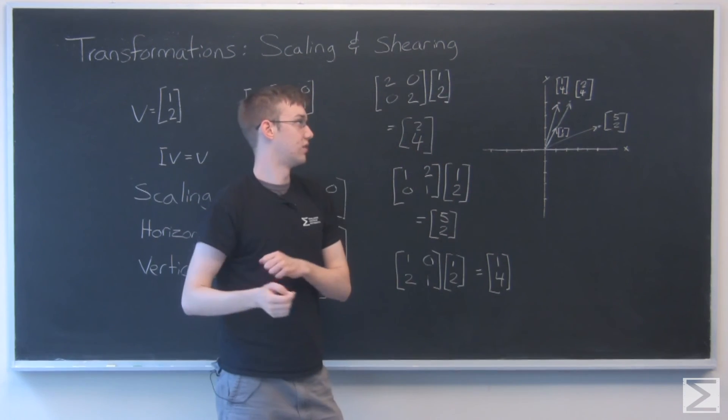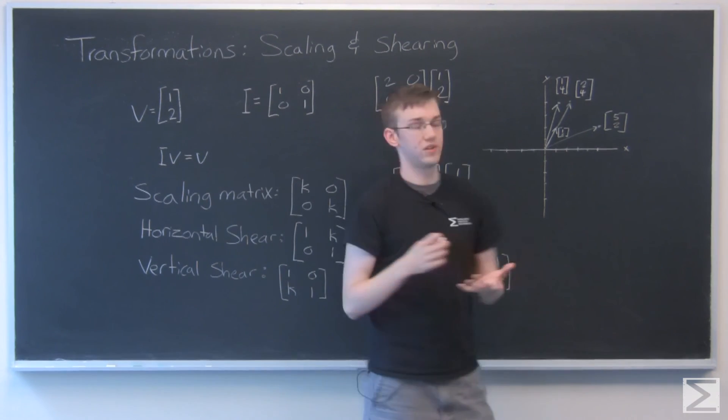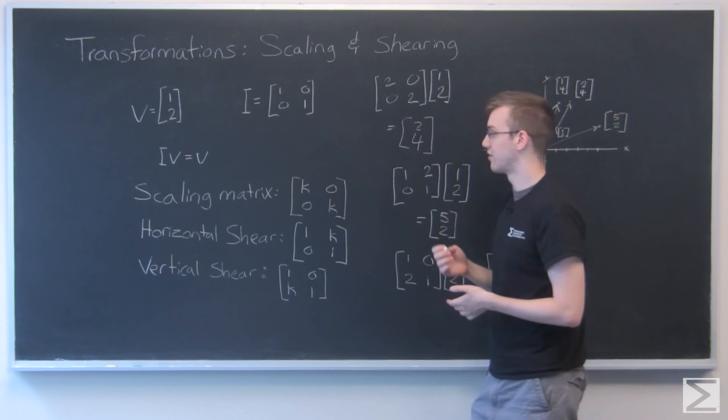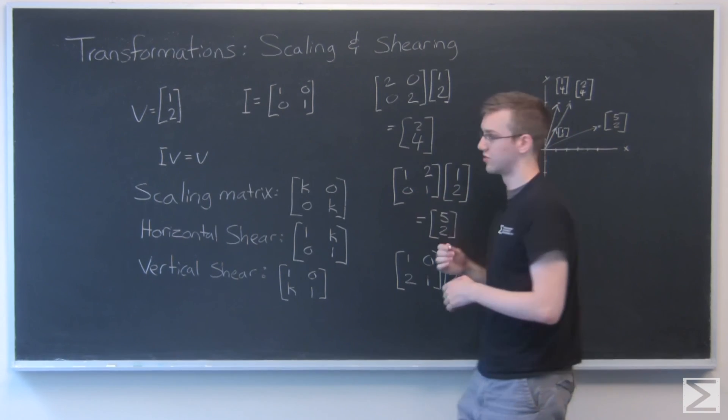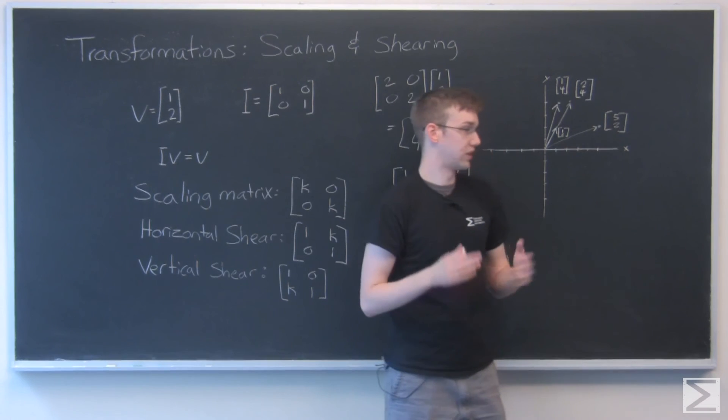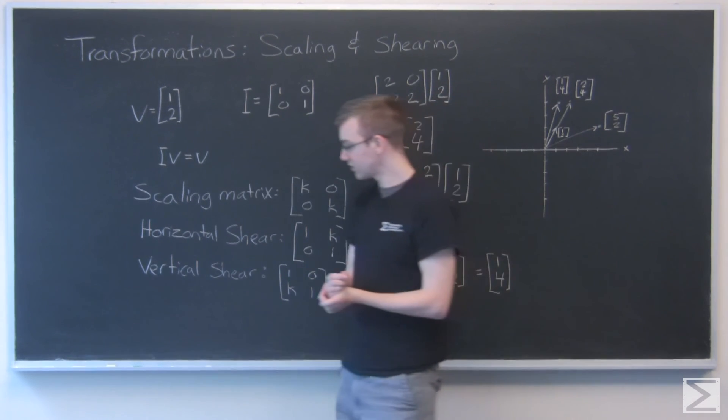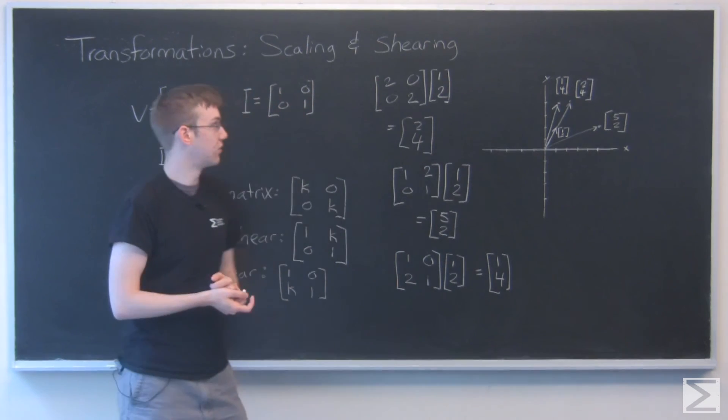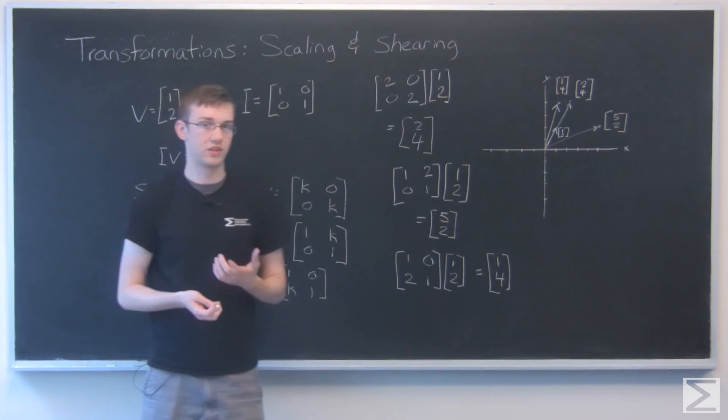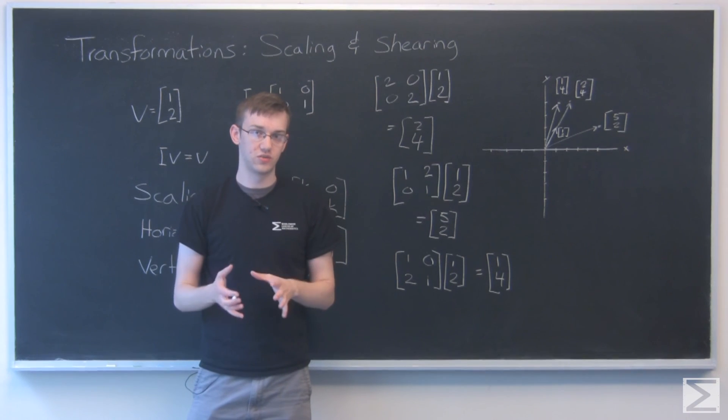Cool. So those are these three basic transformations that we have: scaling, just making the vector longer, and these shearing types where we skew it in one direction or the other. Check forward for other videos, and we're going to look at some more examples of linear transformations where a matrix will be able to change a vector in some way.